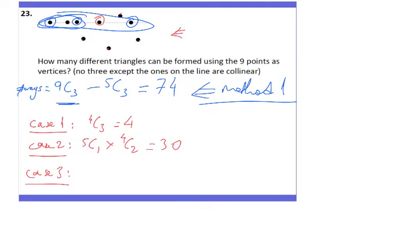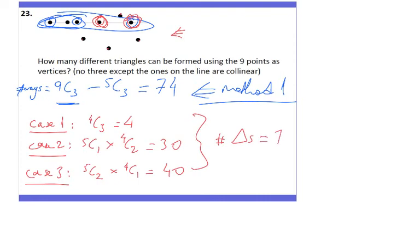In Case 3, I choose two dots from the straight line and one dot from those not on the straight line. That can be done in 5C2 times 4C1, which equals 40. Adding all three cases together: 4 + 30 + 40 = 74 triangles. That is Method 2.